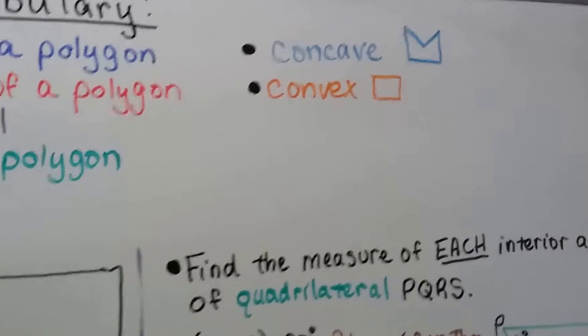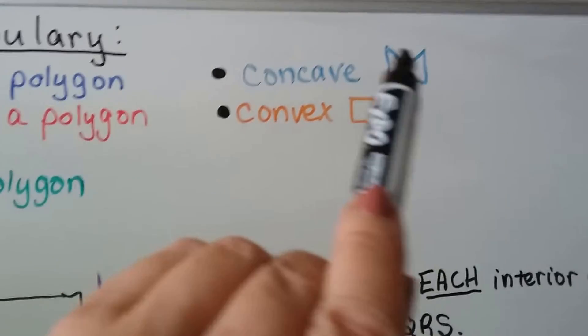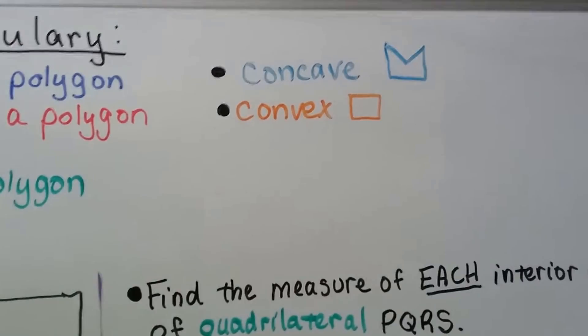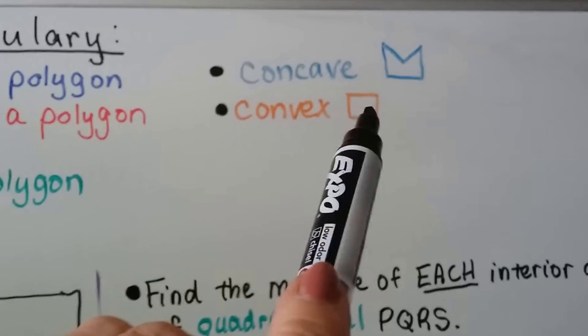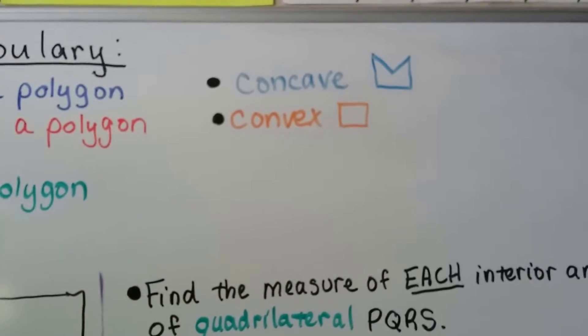Just to remind you, a concave polygon kind of caves in and we can draw an exterior diagonal. A convex polygon has all vertices pointing outward and the diagonals would be on the interior.